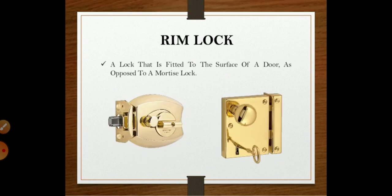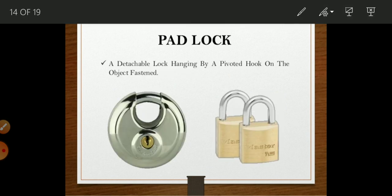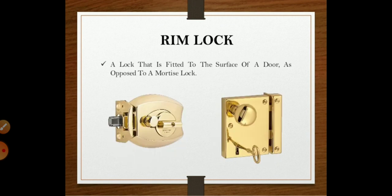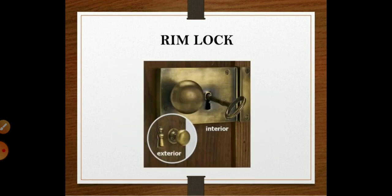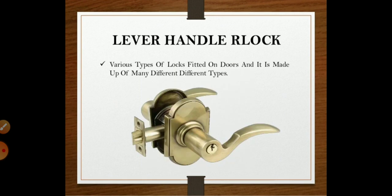The next is the rim lock. It is fitted on the surface of a door. You can see here the rim lock — interior and exterior — with a lever handle lock. The various types of locks are fitted on doors and are made up of many different types.